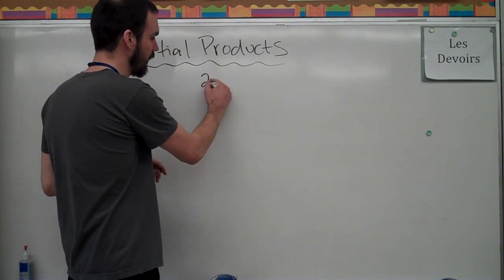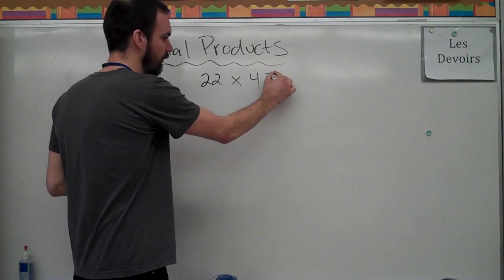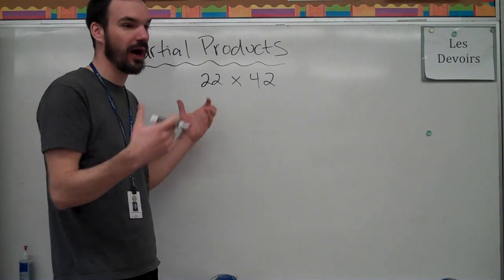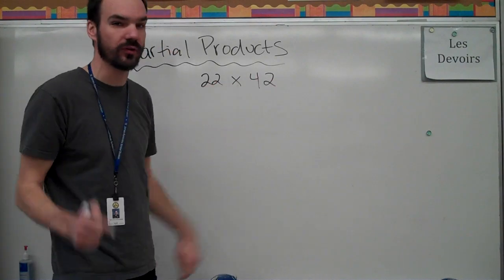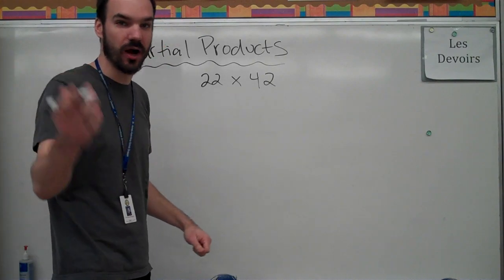If we have our multiplication sentence, which was 22 times 42. Now, we might think, how am I going to do this horizontally? Well, let's break it up for a second, and let's use geometry to help us.